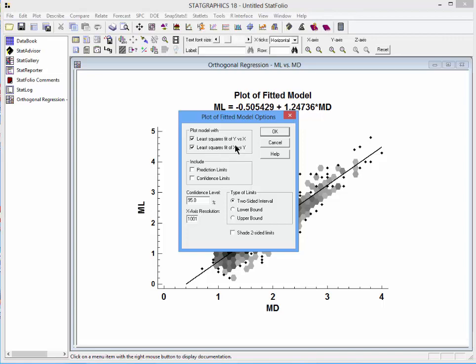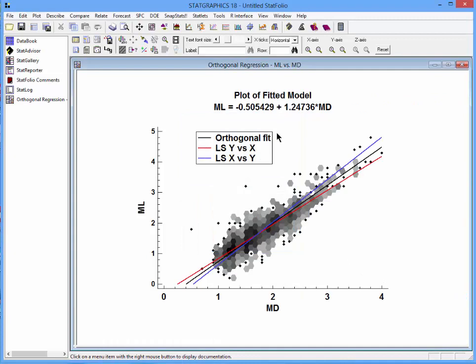I can add the least squared fit of Y versus X and the reverse least squares fit of X versus Y. You can see that the orthogonal fit falls between the two other fits.